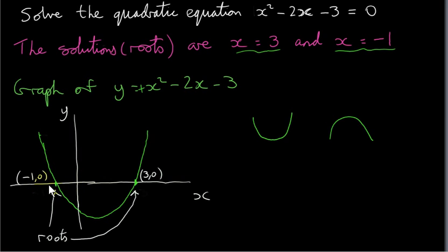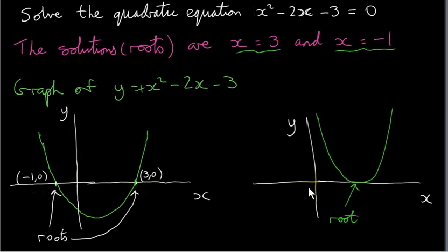Why is that? Well, the reason is that when y is 0, we're just solving this quadratic equation. So when y is 0, we've got x is minus 1 or x is 3 — those are the roots or the solutions. Sometimes a quadratic equation has only one root; in that case, the graph will just touch the x-axis at a single point.